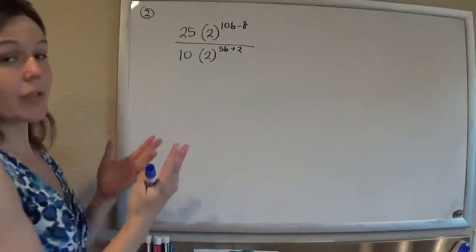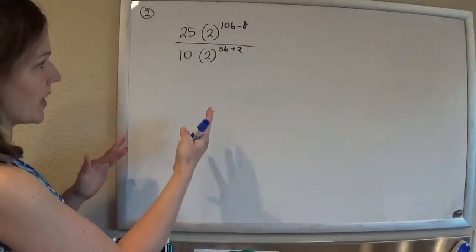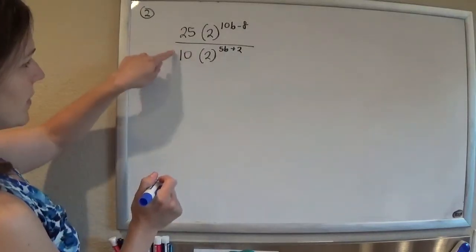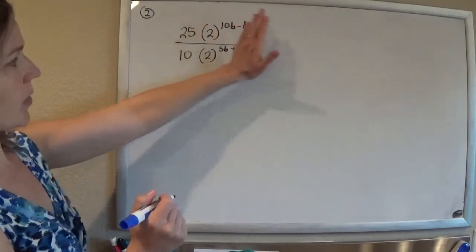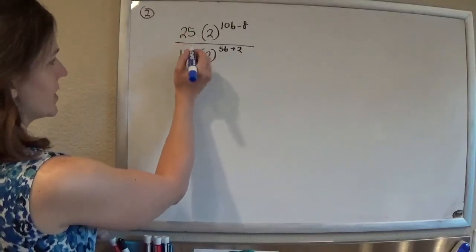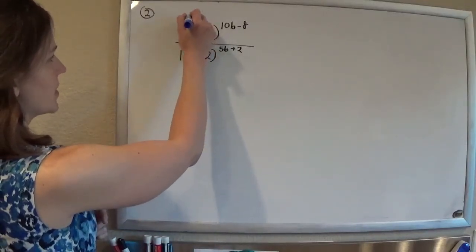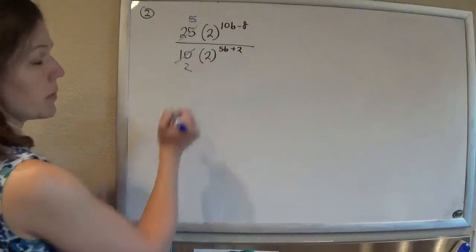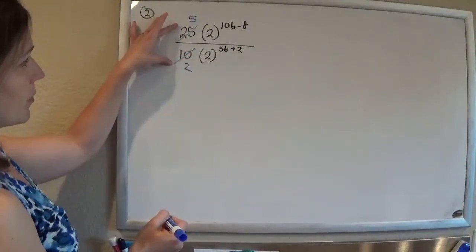Okie dokie. So, straight up algebra, we can start to simplify this thing. 25 tenths, if you ignore the rest of it, you can simplify that by dividing both the top and bottom by 5. So this can become a 5, and that can become a 2, just straight up simplifying the fraction.